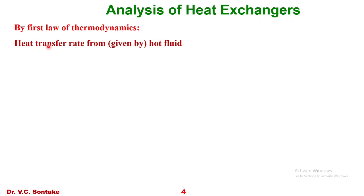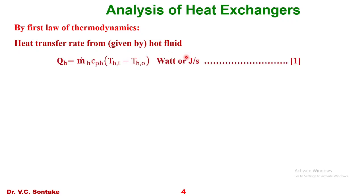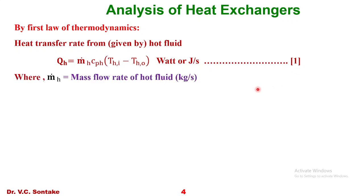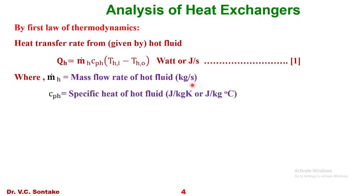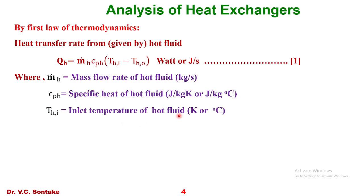In case of a heat exchanger, the heat transfer rate given by the hot fluid is: Q_H = Ṁ_H · C_PH · (T_HI − T_HO) Watts or Joules per second — let us call this equation number 1. Here, Ṁ_H is the mass flow rate of hot fluid in kg/s, C_PH is the specific heat of hot fluid in J/kg·K or J/kg·°C, T_HI is the inlet temperature of hot fluid, and T_HO is the outlet temperature of hot fluid, both in Kelvin or degree Celsius.